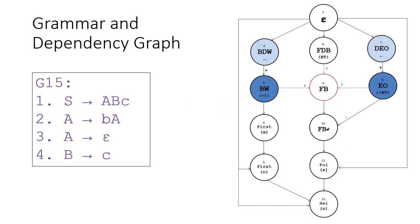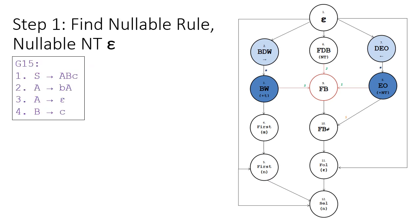Before we discuss all 12 steps, let's take a look at the grammar that we're going to use for the example. The grammar we will use is grammar 15, which has four rules. This is the dependency graph — a graph showing all the 12 steps that we need to take and how they are connected to each other. Let's start with the first step.